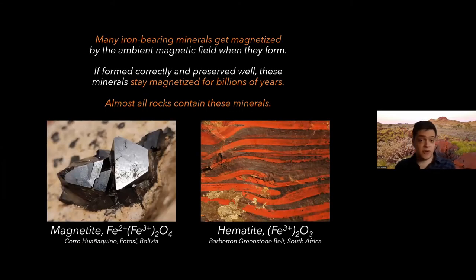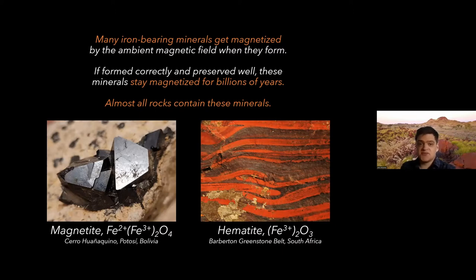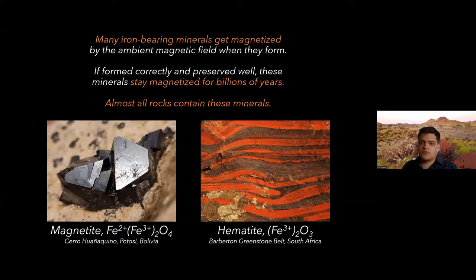Fortunately for us, rocks themselves and the minerals they contain are often great at recording the direction of the magnetic field when they form. There are a handful of minerals that incorporate iron in such a way that they can get magnetized in Earth's magnetic field. The main ones of importance are magnetite and hematite. If these form just right and don't get disturbed too much later on, they can hold onto and preserve their magnetic signals for many billions of years. Tiny grains of these minerals are basically microscopic compasses that geological events can move but then freeze in place so that they preserve that field direction. These minerals will serve as our windows, our time capsules, into how the crust has moved through Earth's magnetic field.